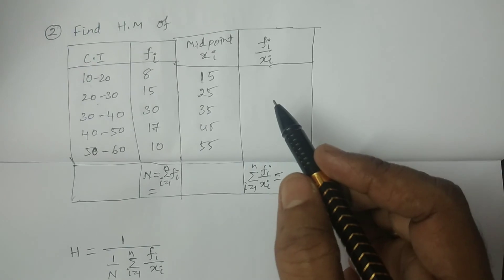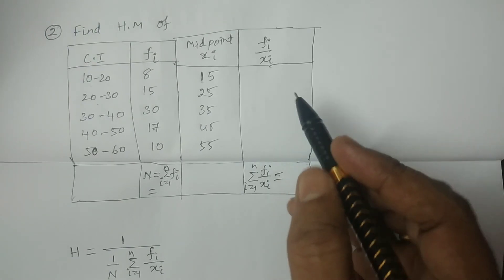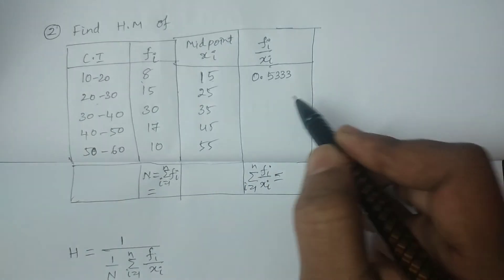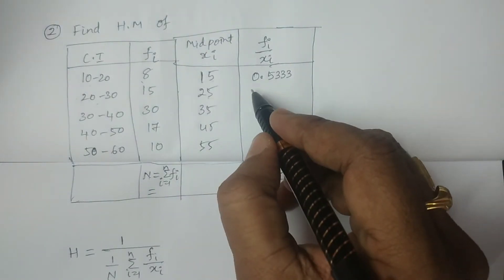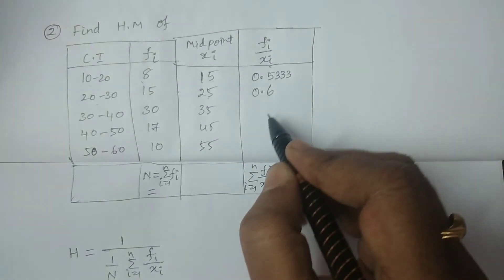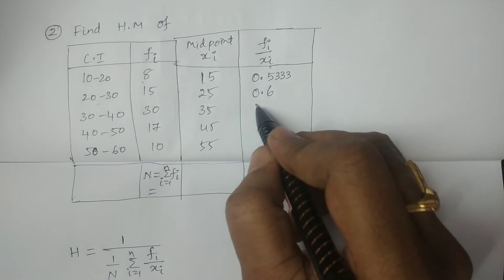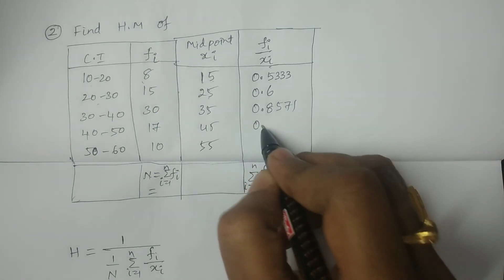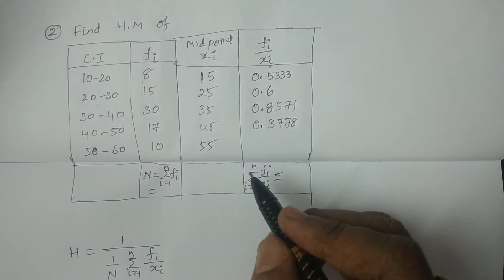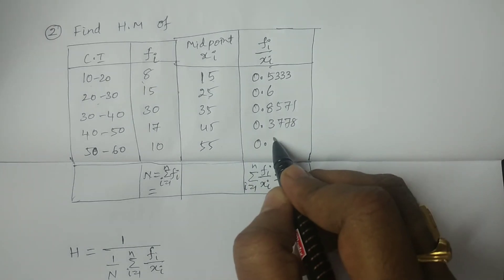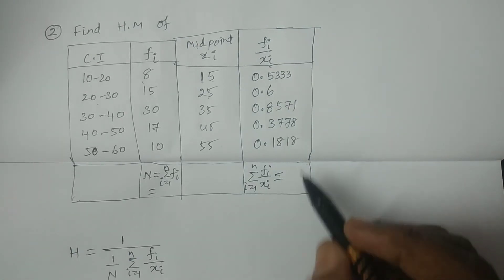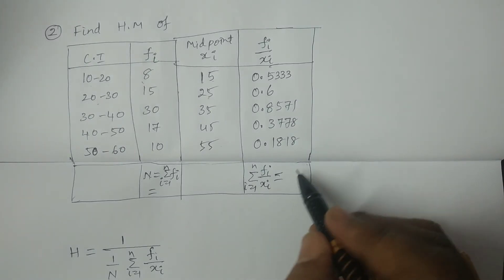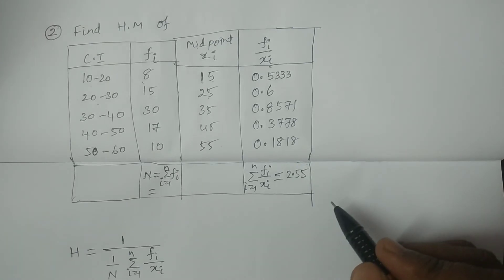Now calculate fi/xi for each row: 8/15 = 0.5333, 15/25 = 0.6, 30/35 = 0.8571, 17/45 = 0.3778, and 10/55 = 0.1818. The total summation of fi/xi values is 2.55.